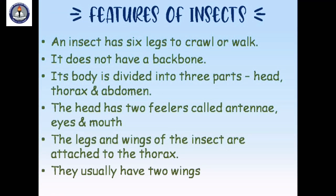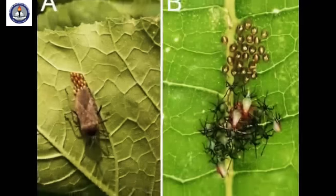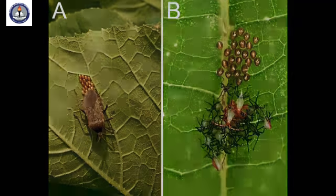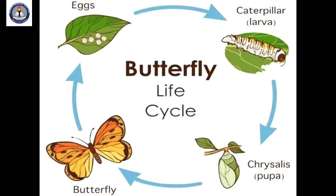Insects usually have two pairs of wings. Most insects reproduce by laying eggs. They have a very interesting growth cycle. Let us take the life cycle of the butterfly as an example.